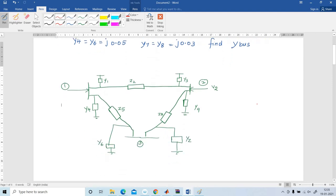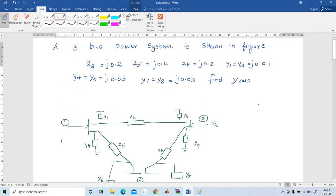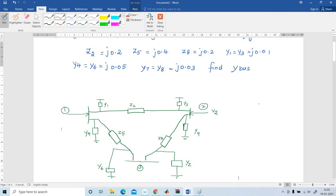Y bus is otherwise known as admittance bus. How to find the admittance from impedance? Y is equal to 1 by Z. Inverse of impedance is admittance.